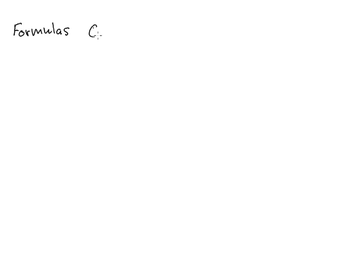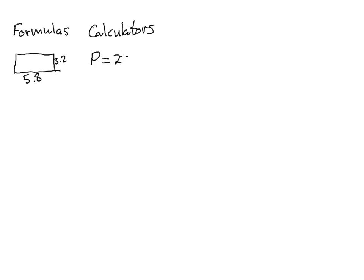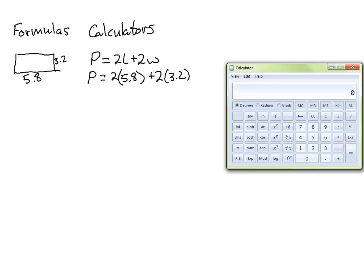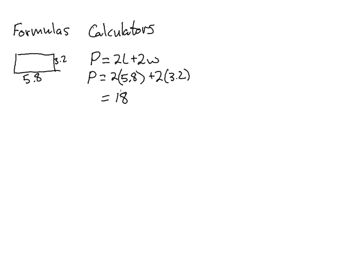Up until now we've been able to use formulas and calculators to figure out so many types of problems. For example, with a rectangle where one side is 3.2 and the other is 5.8, we had a formula for the perimeter: 2 times length plus 2 times width. So P equals 2 times 5.8 plus 2 times 3.2, and using a calculator that equals 18. If the sides were in inches, the perimeter would also be in inches.